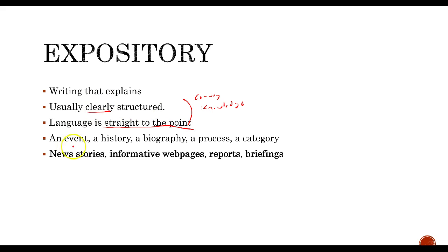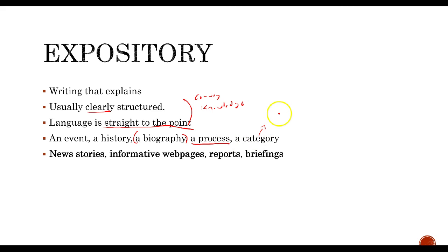Description in the language isn't really so necessary or valued in expository writing. Good expository writing is about being clear and straight to the point. Types of expository writing could be events — maybe a history of something — or a biography of somebody, like a biography of Princess Diana.